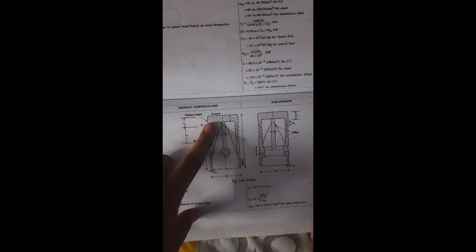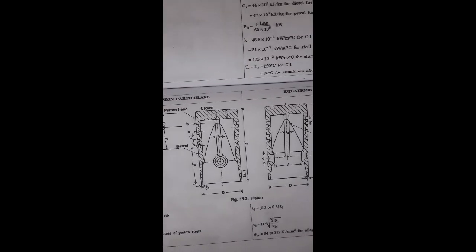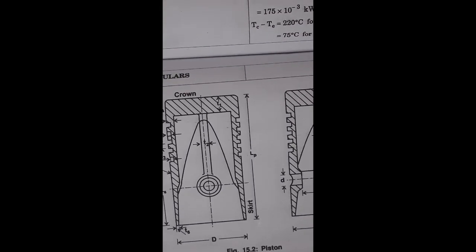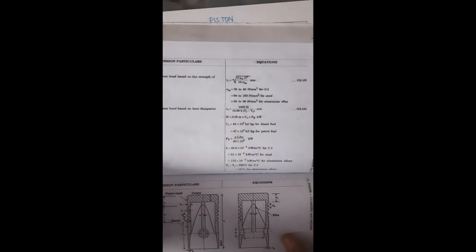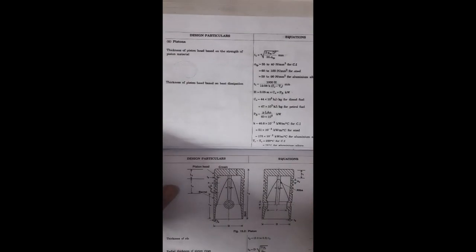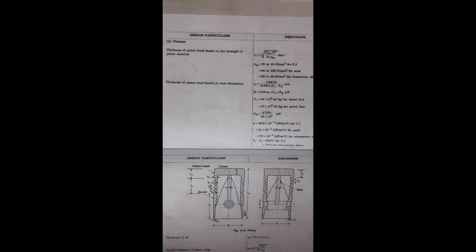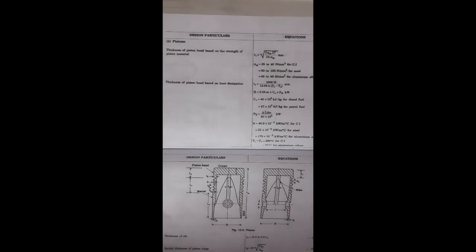First, we are going to design the piston based on piston head thickness, finding the value of t1 — the crown thickness. The piston head thickness can be found using two formulas: one based on the strength criteria, and the next based on heat dissipation. Let us start our problem.